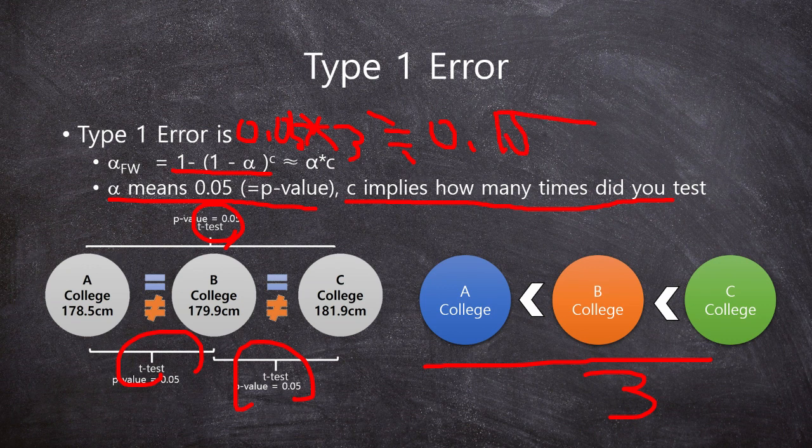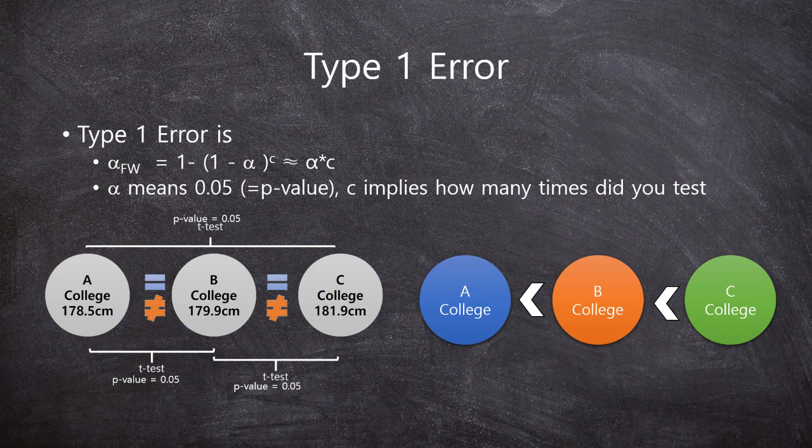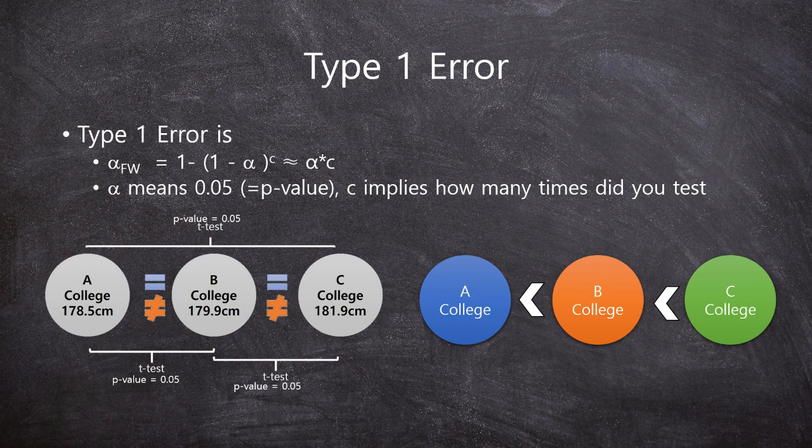15%, so our p-value is much, much larger than our expected p-value, 5%, right? So our conclusion might be wrong because of the Type 1 error.